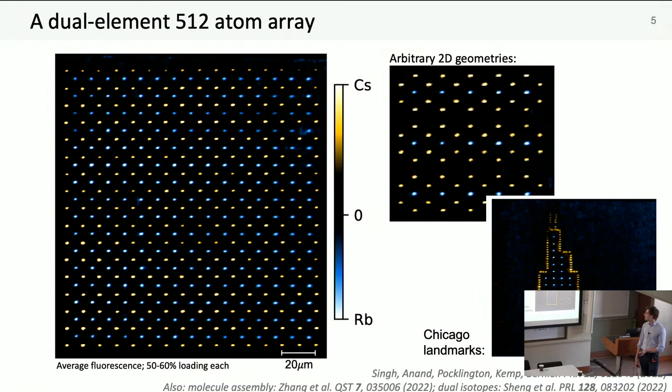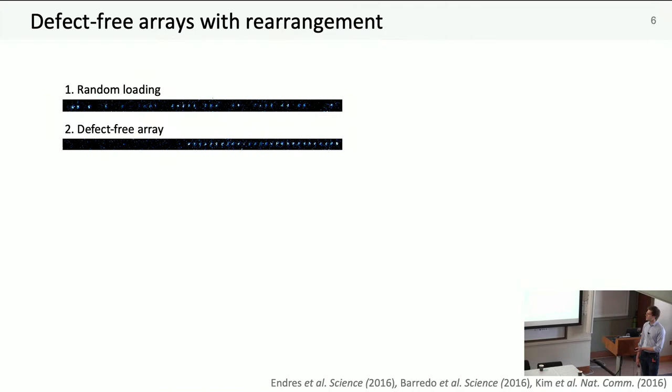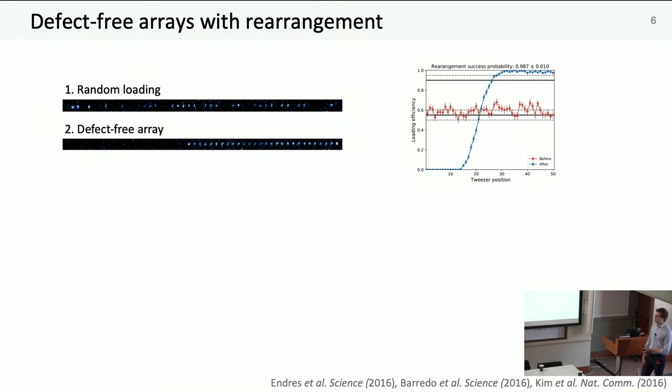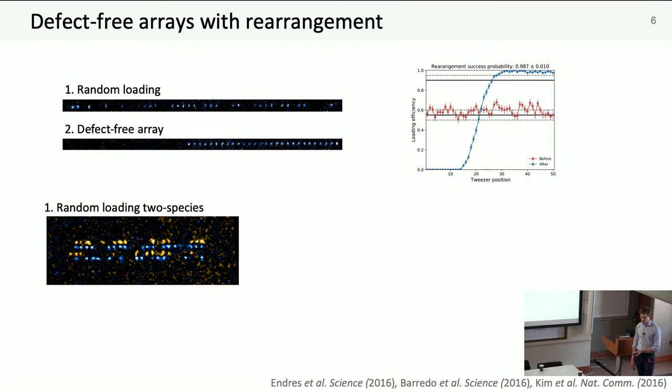Because we have SLMs, we can make arbitrary 2D geometries. Here are a couple of examples: a dressed hexagonal lattice and these famous Chicago landmarks, the Sears Tower and the Bean. This is all averaged fluorescence, and we've shown in the past defect-free rearrangement in 1D where we're loading into AODs and compressing the row with about 99% success per site.